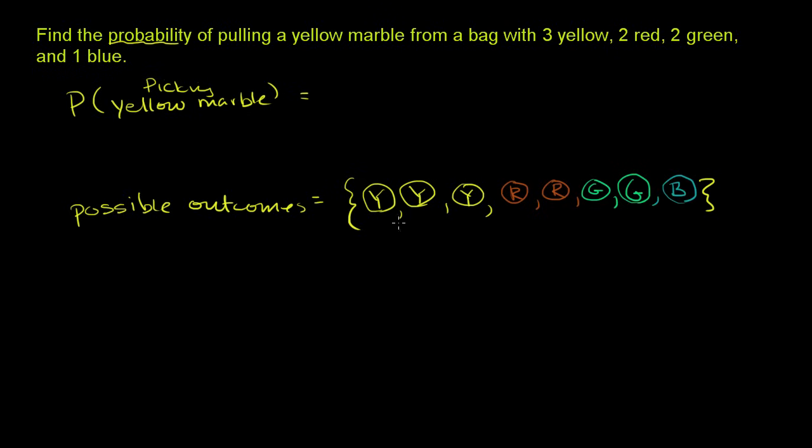So this is all the possible outcomes. And sometimes this is referred to as the sample space. Sample, the set of all the possible outcomes. Fancy word for just a simple idea. That the sample space,